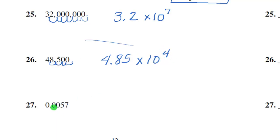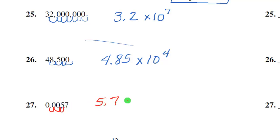This number is a small decimal — 57 ten-thousandths. We want to put it in scientific notation, so we move the decimal to the right until we get a number between 1 and 10. We move 1, 2, 3 slots — we can't stop at .57, so we go to 5.7. We know the exponent is going to be negative because we started with a small decimal, and we moved 3 slots, giving us 5.7 × 10^-3.